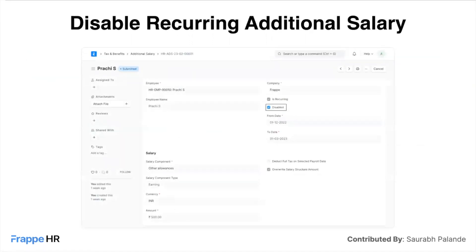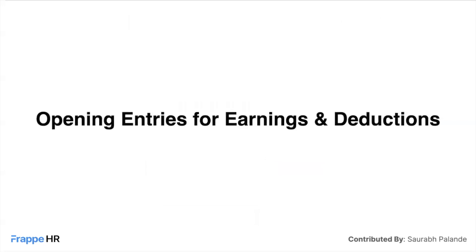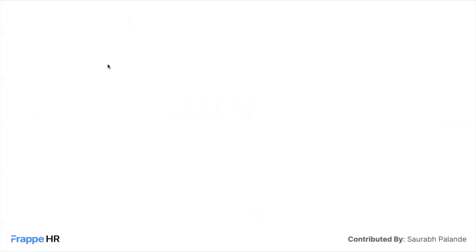You can now also disable a recurring additional salary. For example, if you want to give a bonus to an employee for three months but in the second month you decide to stop it, you can simply disable the document — unlike before, where you had to cancel the additional salary, which was not possible because it was already linked to previous salary slips.